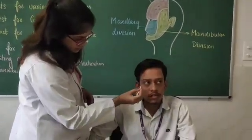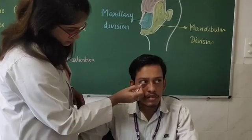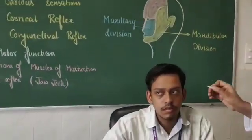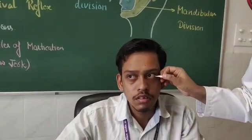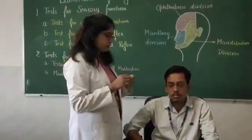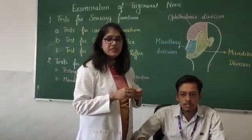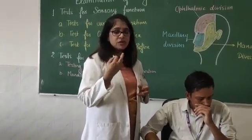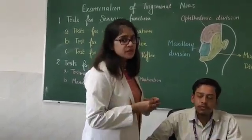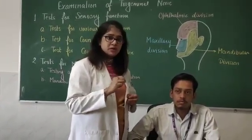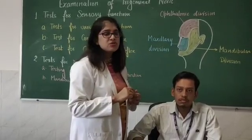We observe whether there is a blink response. If blink is present, it means the test is normal — both the fifth and seventh nerves are normal. We test in both eyes. We could see there was a blink on touching the conjunctiva, confirming the conjunctival reflex is present. For the corneal reflex, we try to avoid touching the central portion of the cornea; instead, we touch the peripheral portion of the cornea or the corneal-conjunctival junction, also called the limbus.